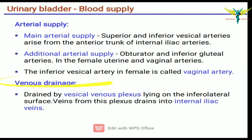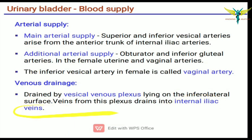The venous drainage of the urinary bladder is through the vesical venous plexus, which lies on the inferolateral surface of the bladder. The veins from this plexus drain into the internal iliac veins.